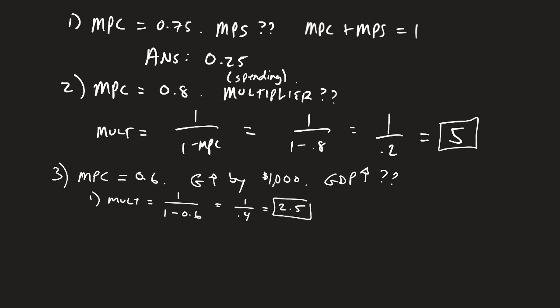What that means is any change in autonomous spending, which includes government expenditures, will make this increase by 2.5 times, holding all else constant. We're not talking about crowding out or anything else yet.